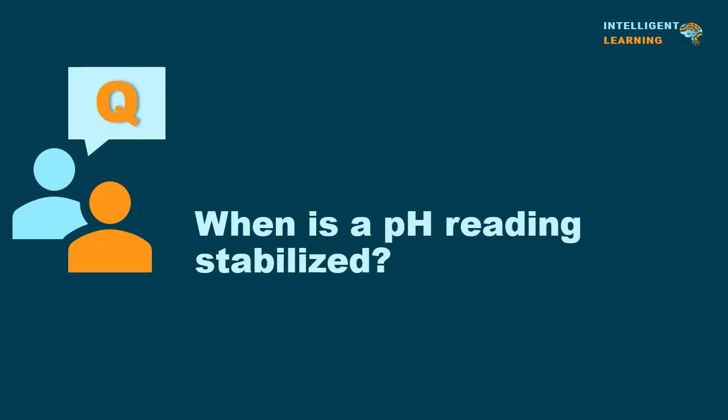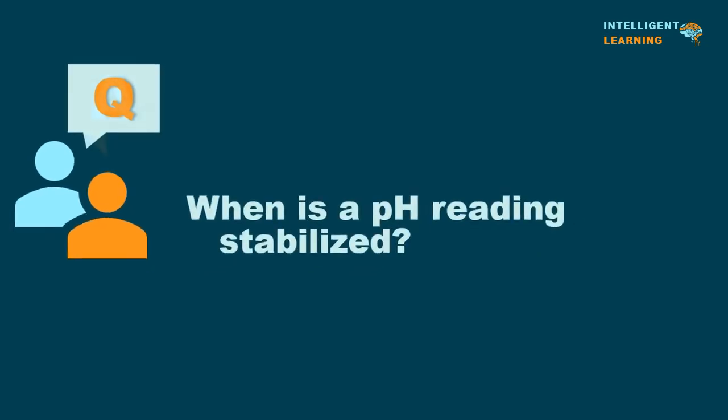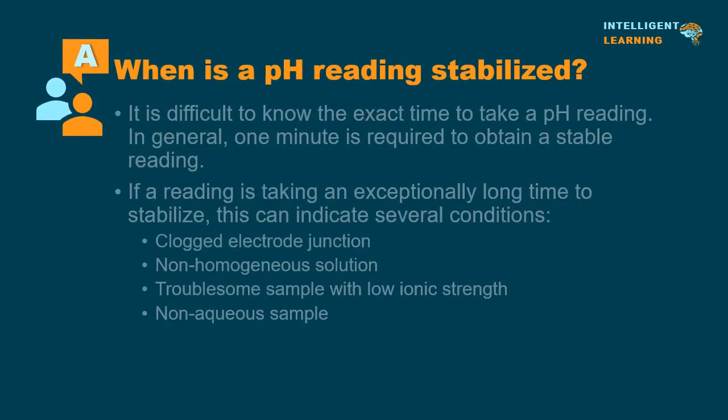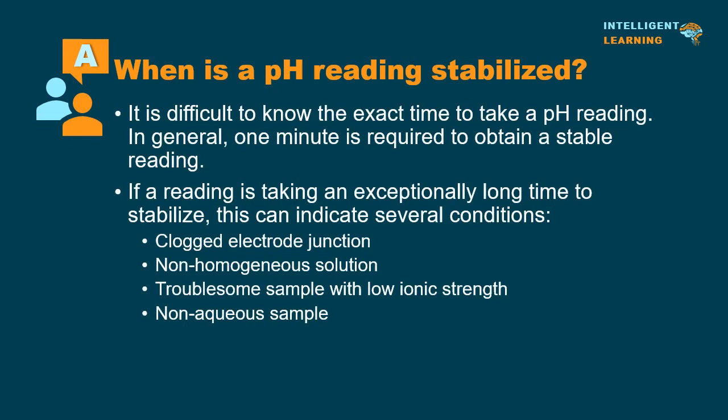When is a pH reading stabilized? It is difficult to know the exact time to take a pH reading. In general, one minute is required to obtain a stable reading. If a reading is taking an exceptionally long time to stabilize, this can indicate several conditions: a clogged electrode junction, a non-homogeneous solution, a troublesome sample with low ionic strength, or a non-aqueous sample.